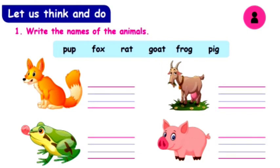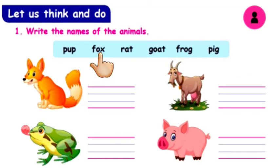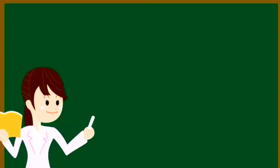Let us think and do. Look at the heading. Write the names of the animals. Children, here some animal pictures are given. We have to select the correct answer from the box and write in the blanks. Shall we start?